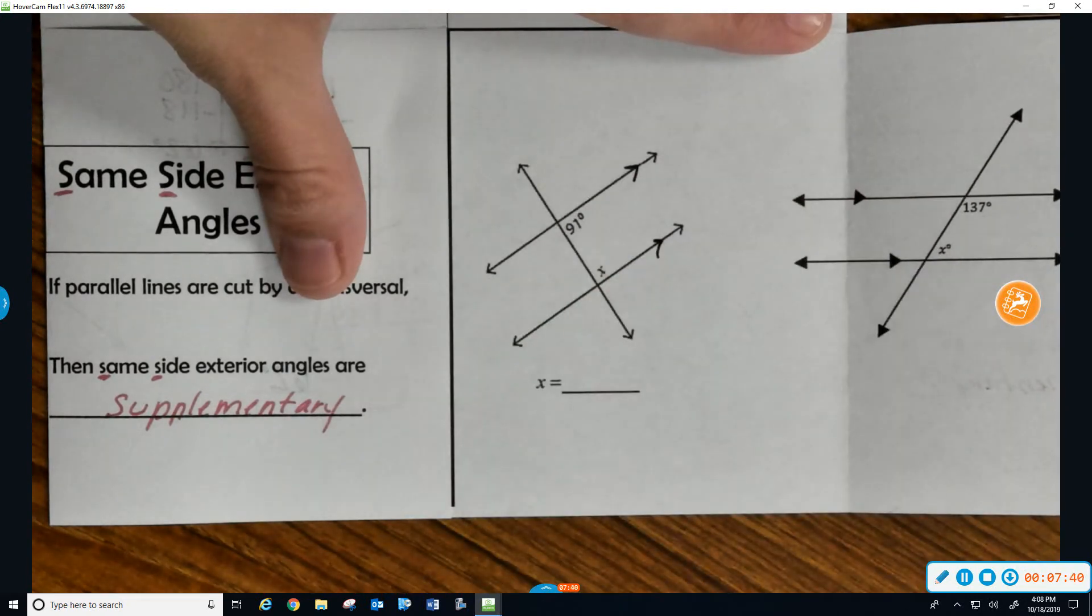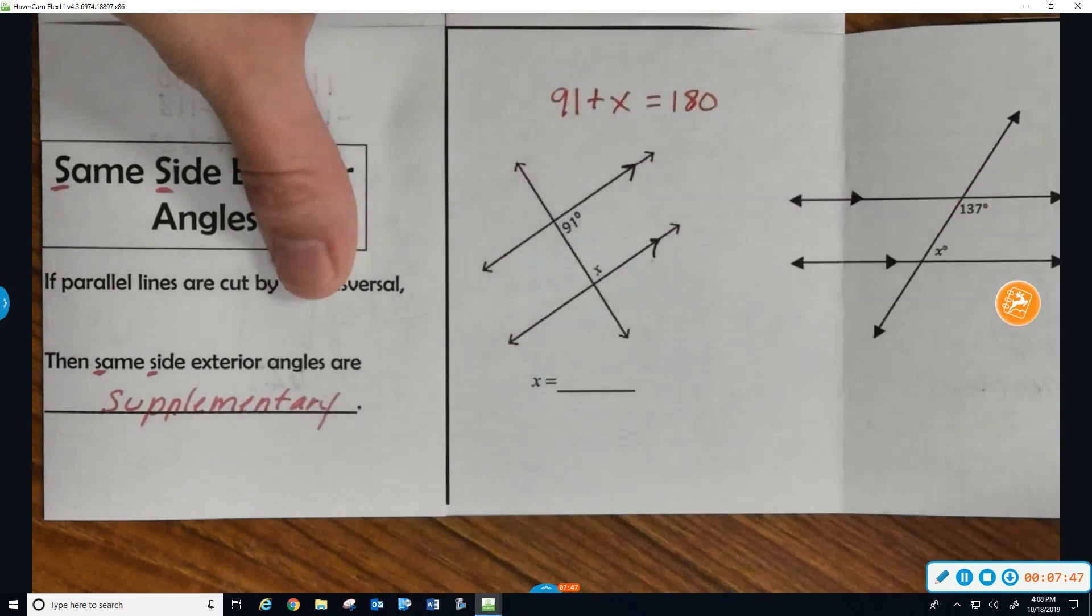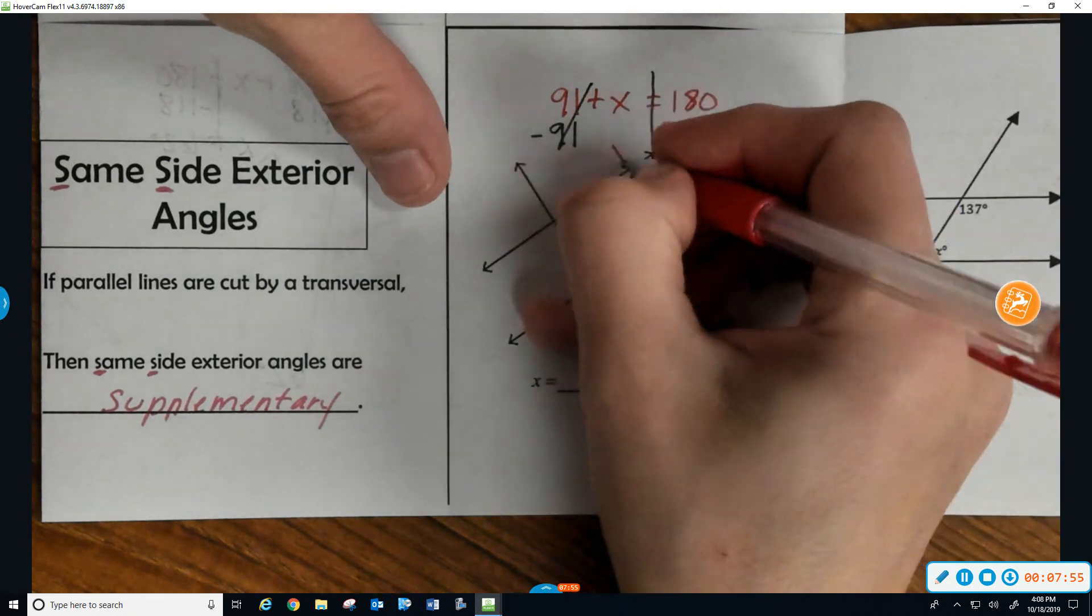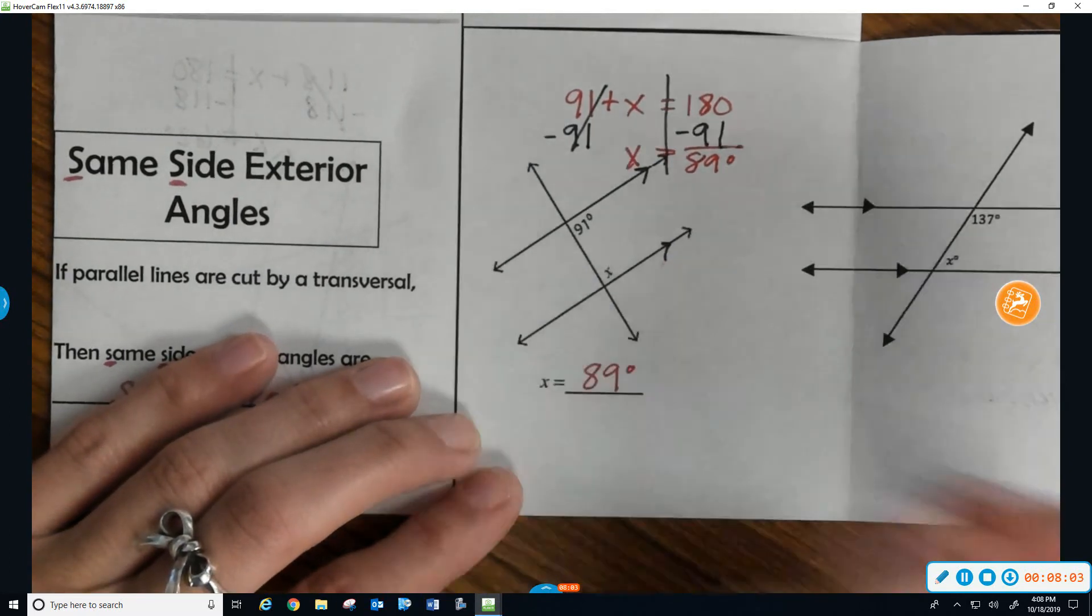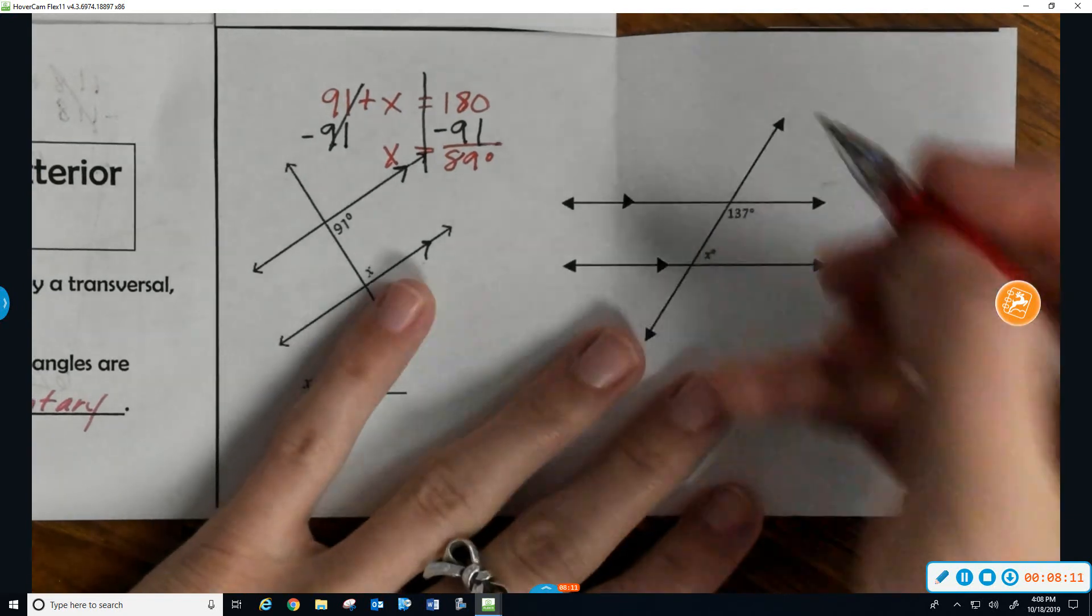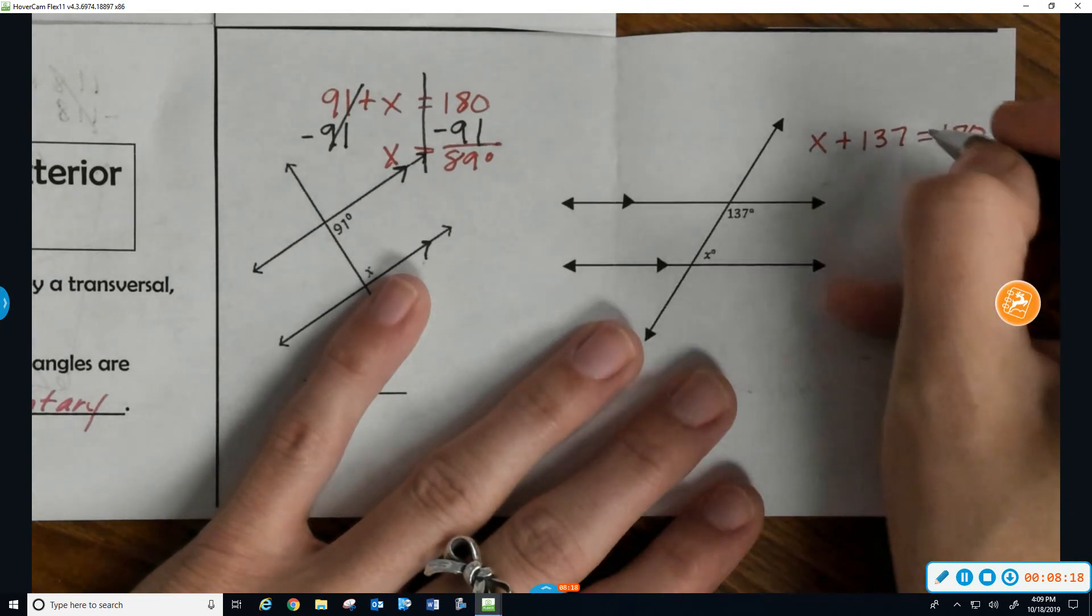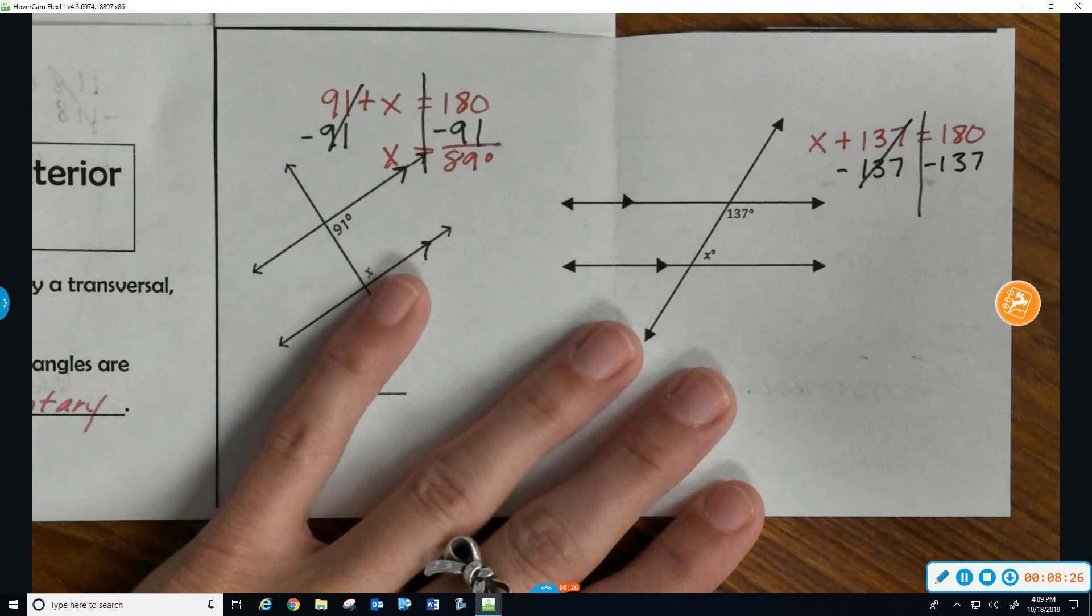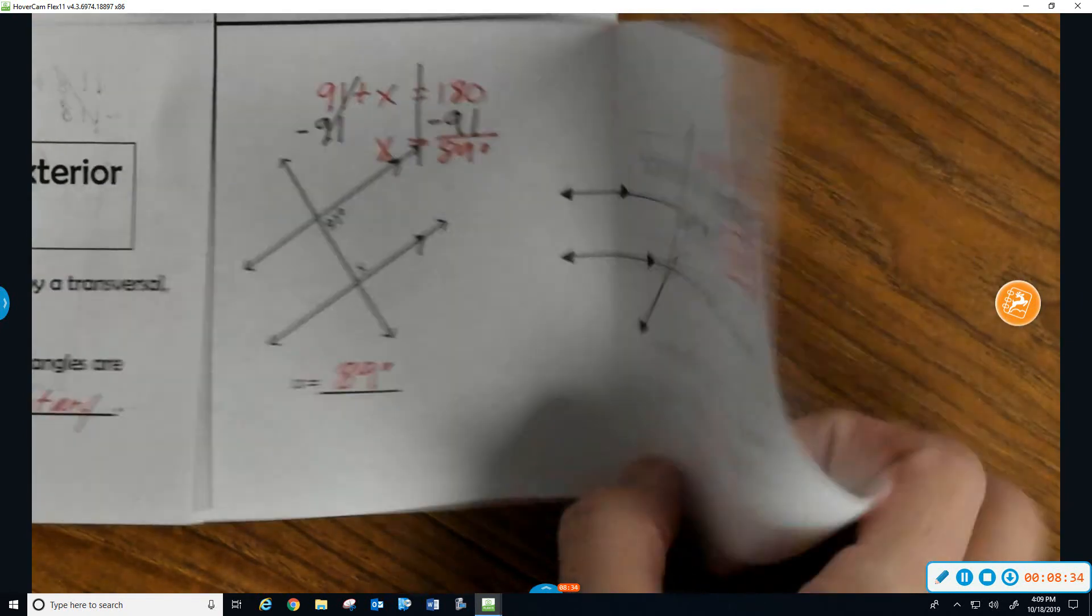Set these as parallel. We add the 91 degrees here plus the X is equal to 180. Subtract the 91 from both sides to isolate X. And we're going to wind up with X equals 89 degrees. Sorry, I got a little sloppy there. My picture got in the way. It's 89 degrees. The next one actually is the exact same. We don't have a whole lot of algebra going on right here. We're going to take our X plus 137 degrees and set it equal to 180 for our supplementary. And all we have to do is subtract the 137 from both sides to get it away from X. So that X is then going to equal 43.